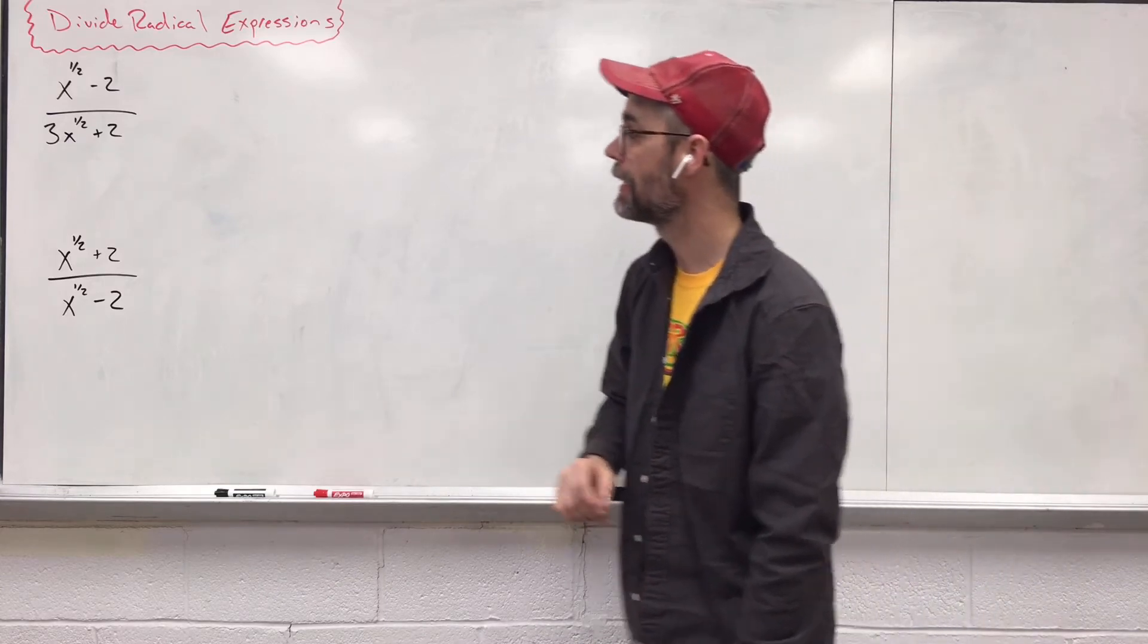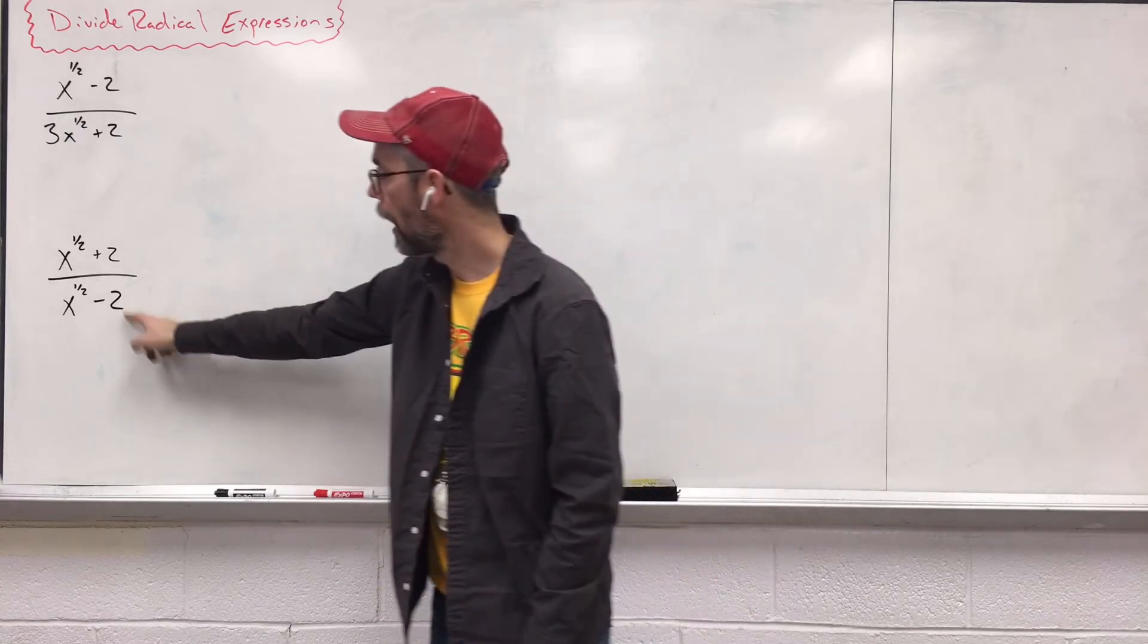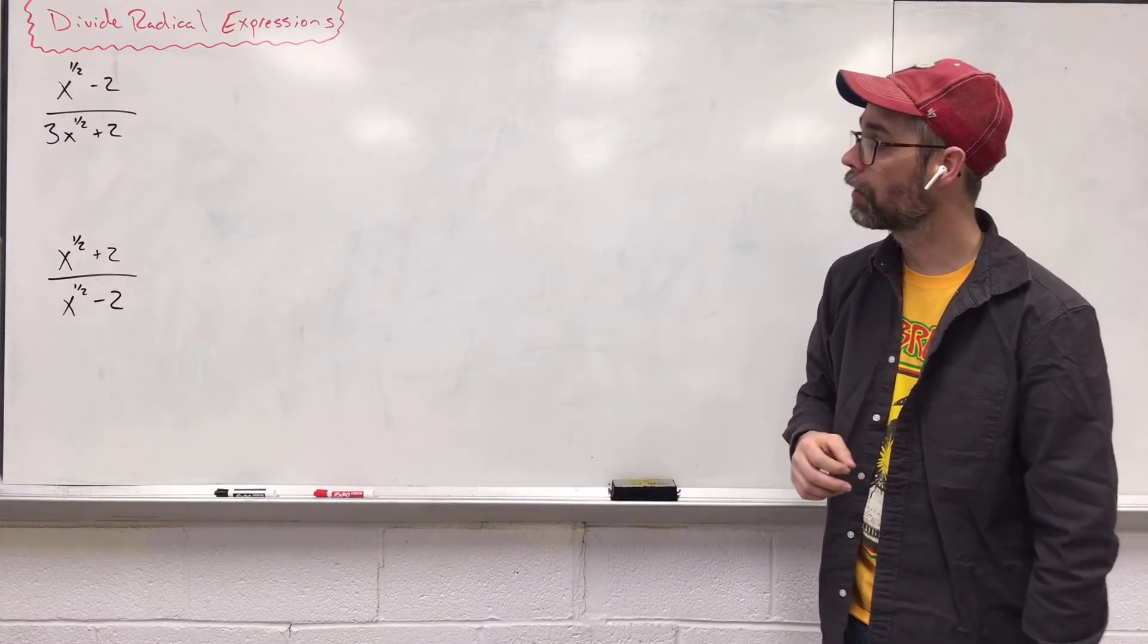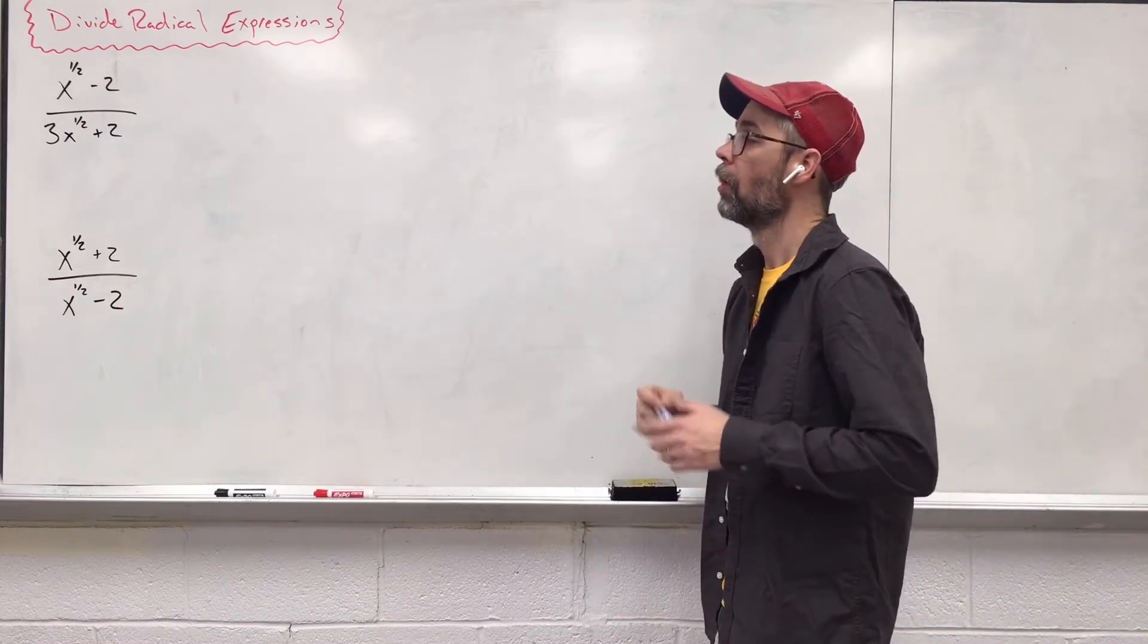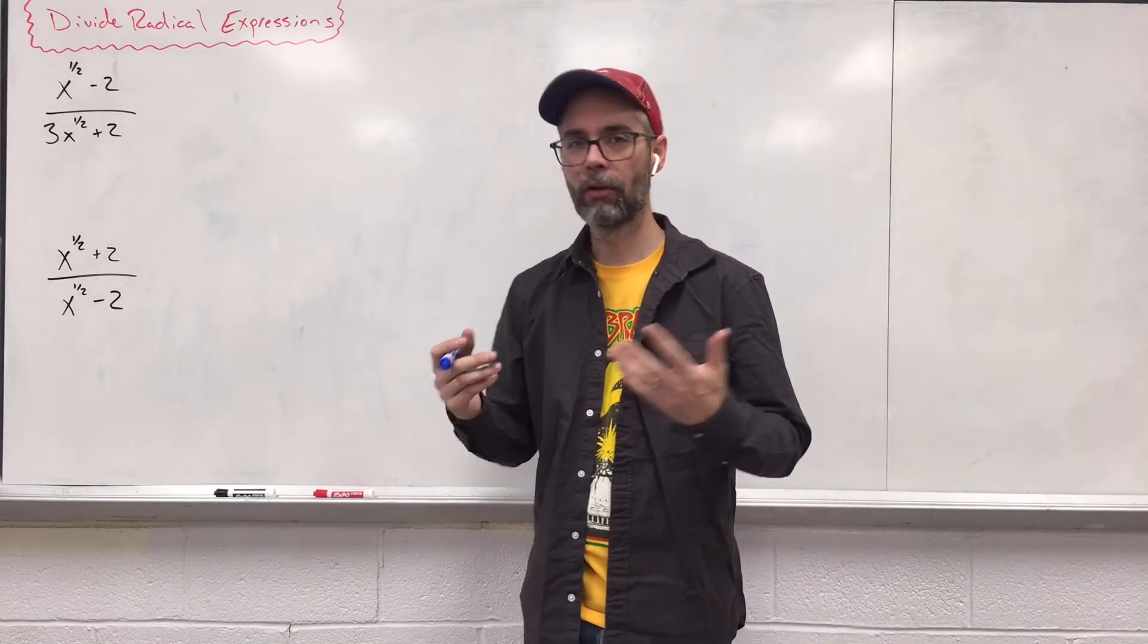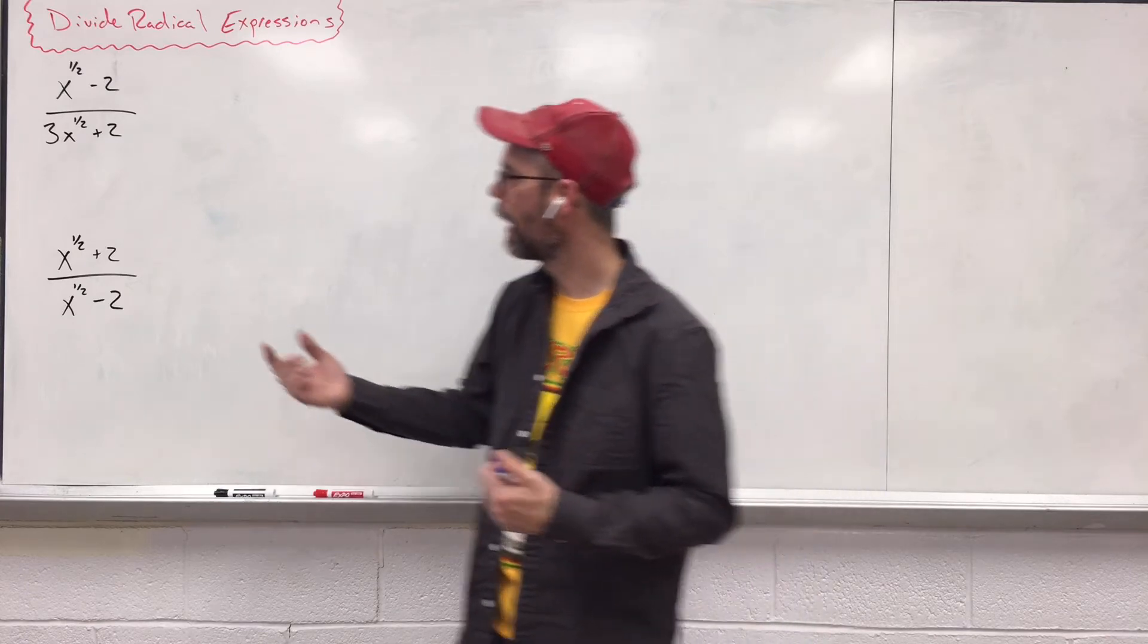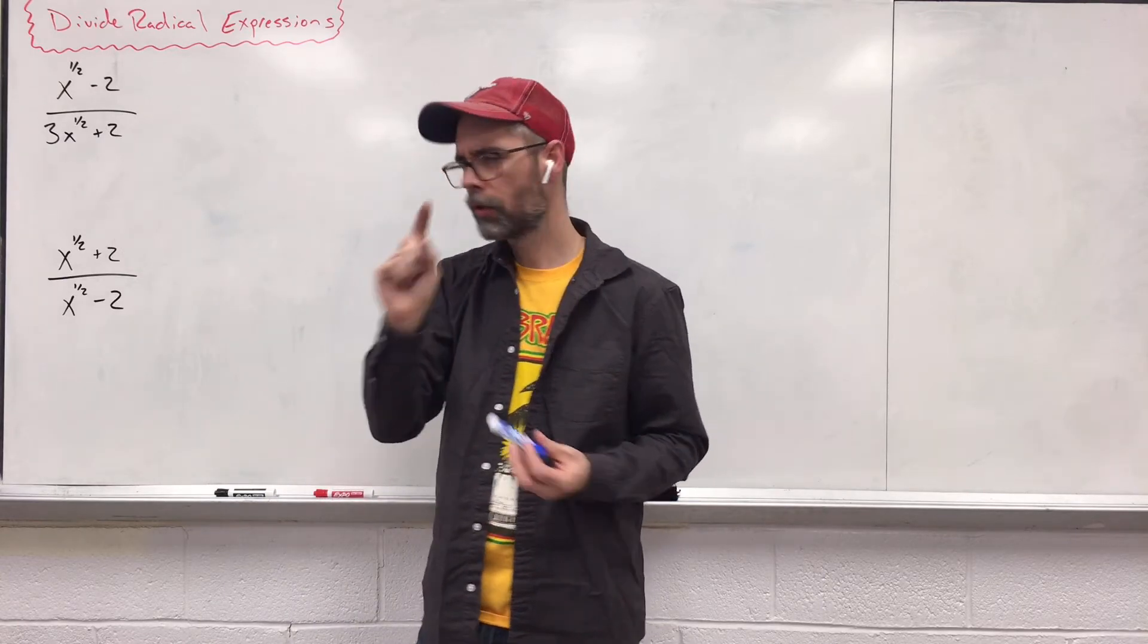If you happen to see a fraction exponent down here on the bottom, especially when we have binomials, remember groups of two, we're going to have to do something called rationalizing the denominator, and we're going to do it by multiplying by conjugates. So what is a conjugate? Well, conjugate words are two words that kind of mean the same thing, different forms. We're going to have a different binomial that's very similar with one small change.